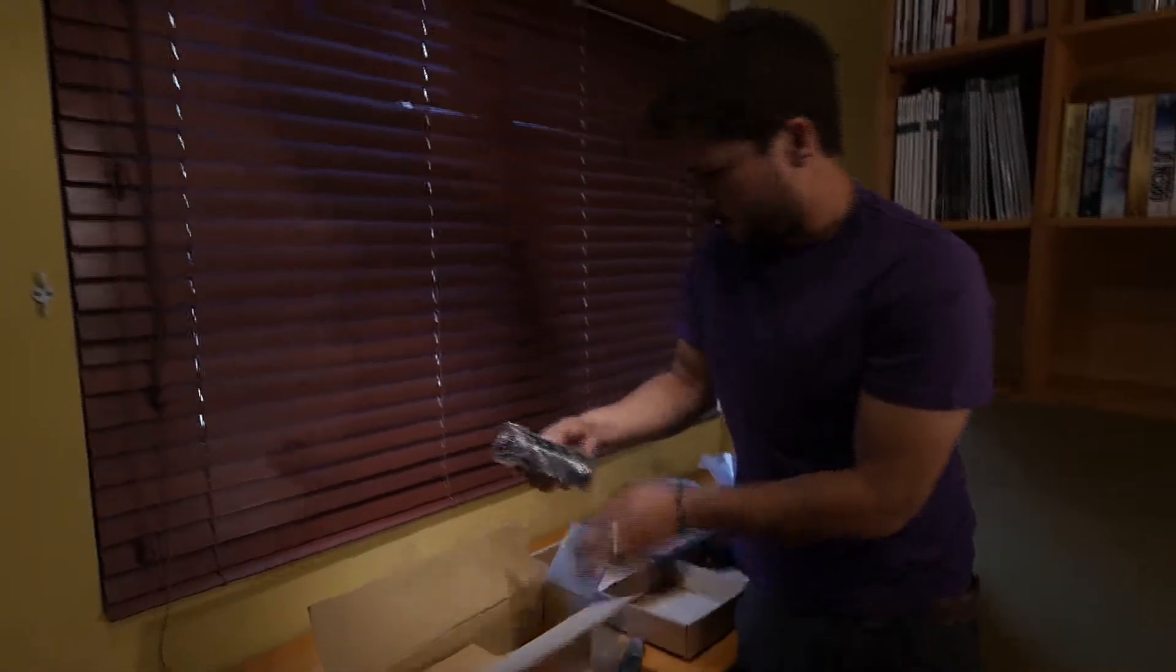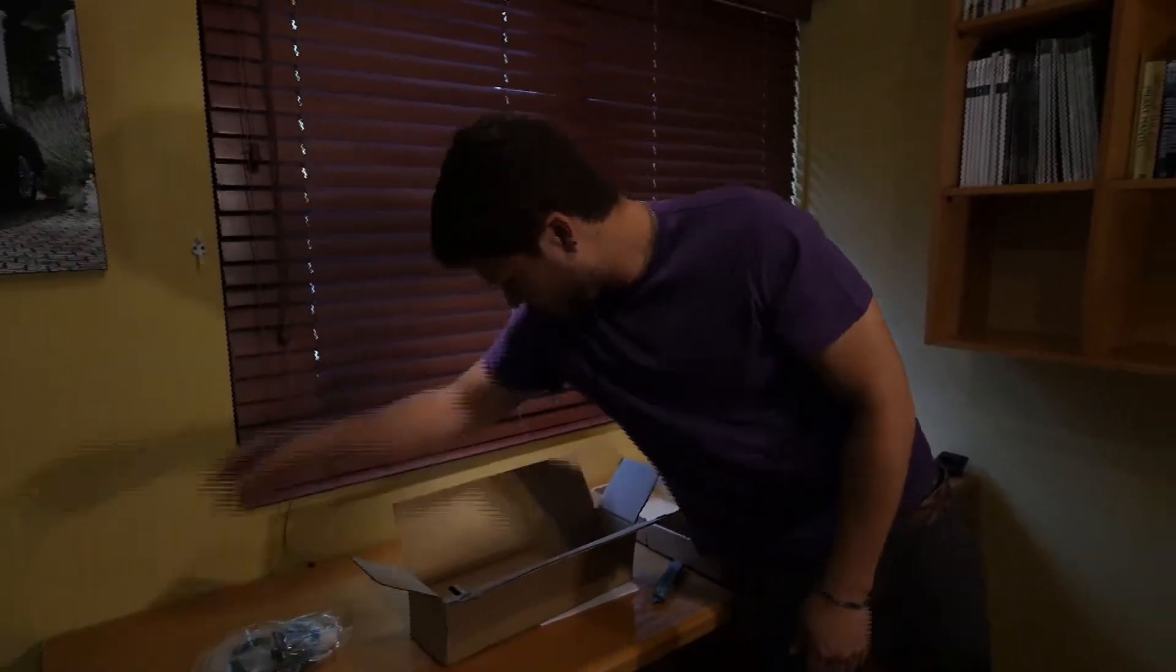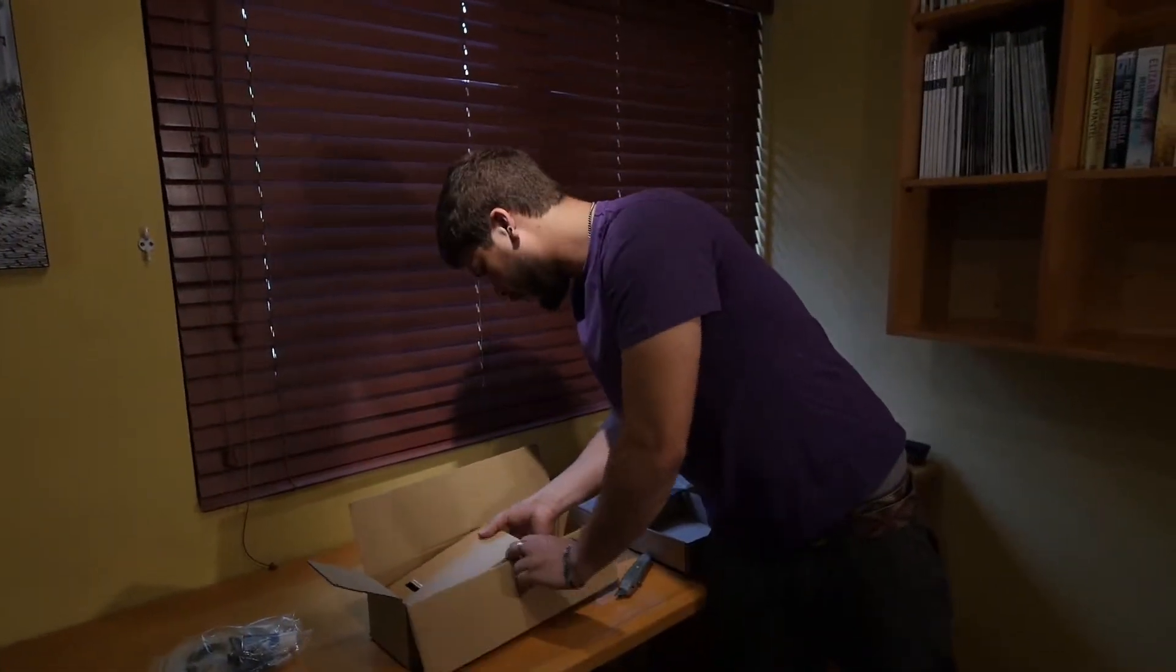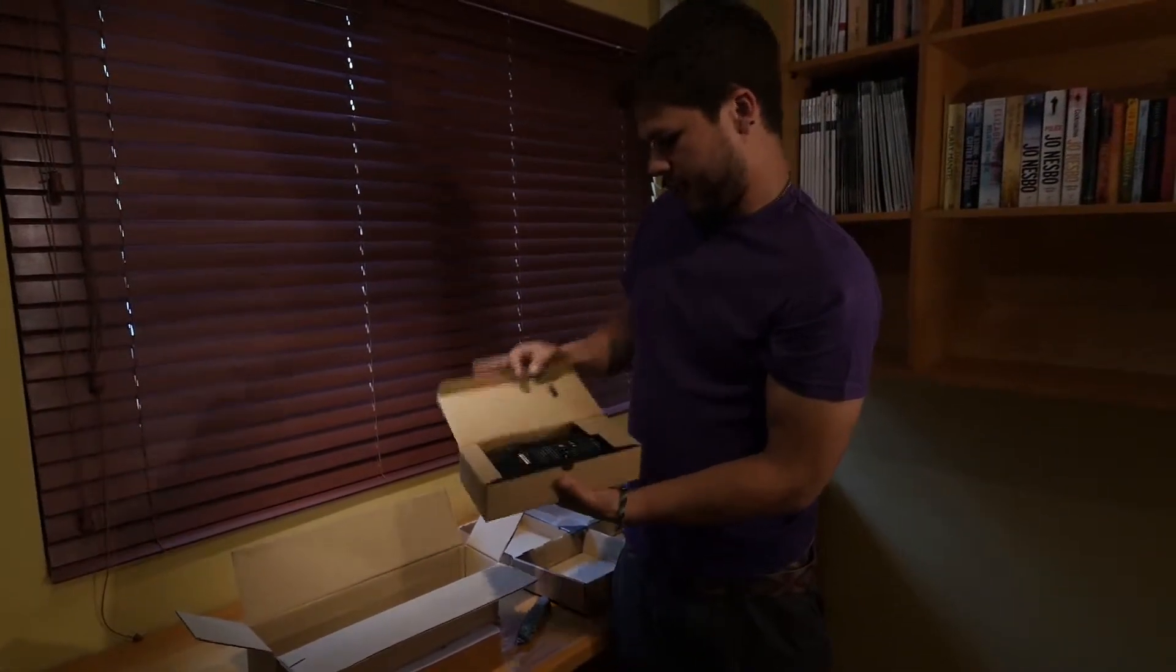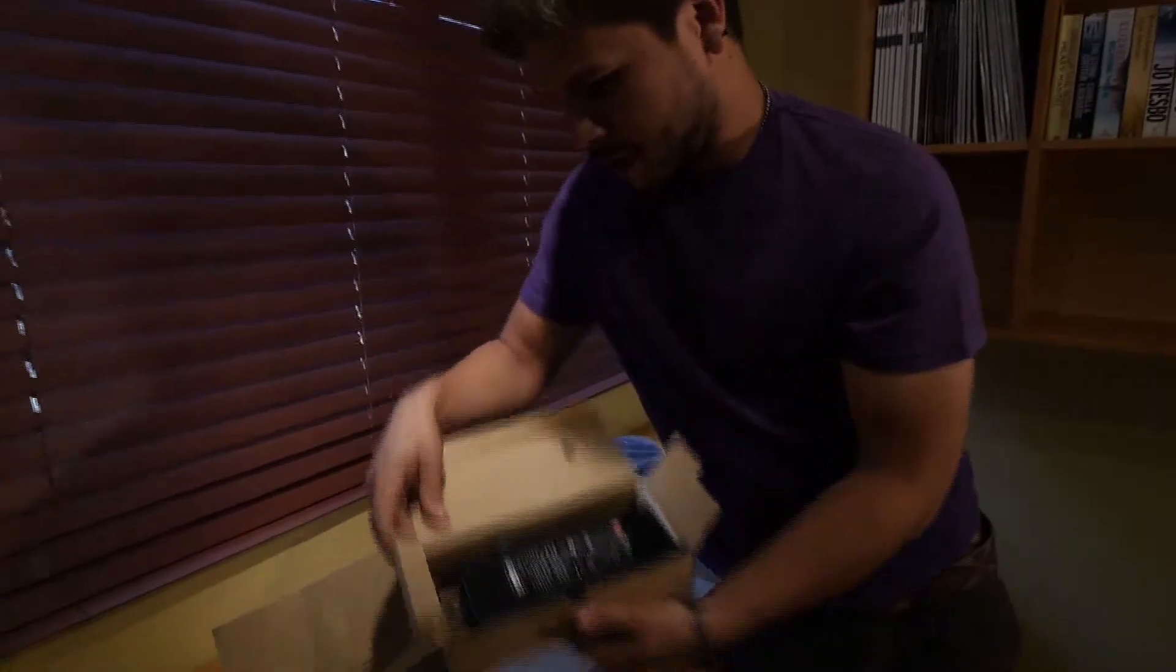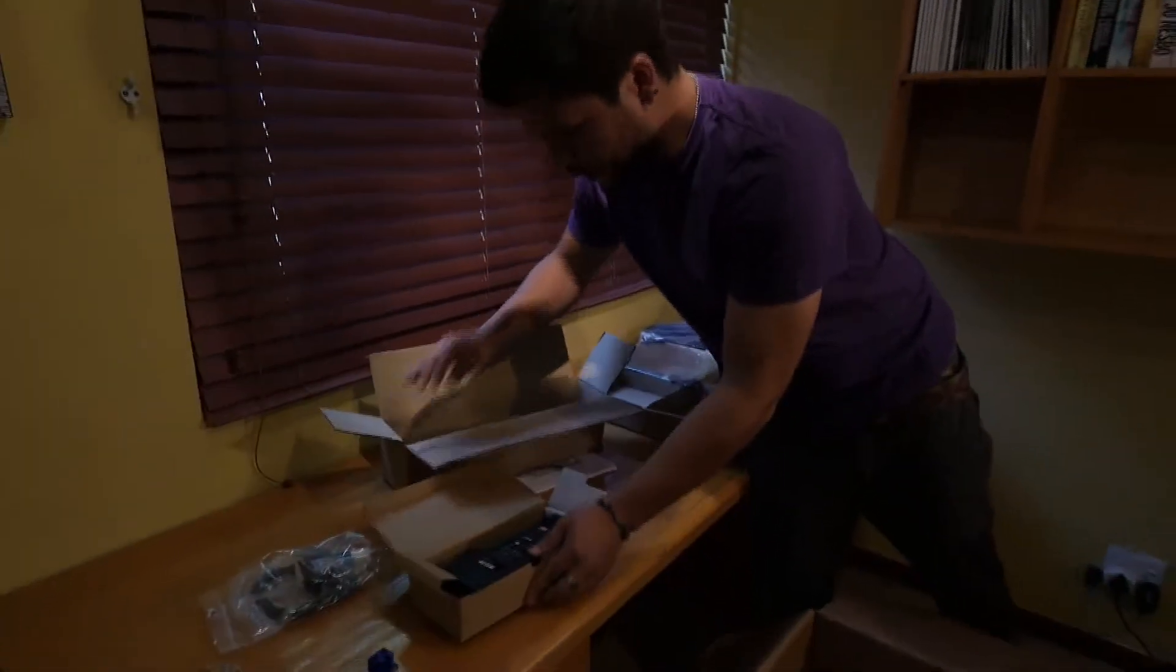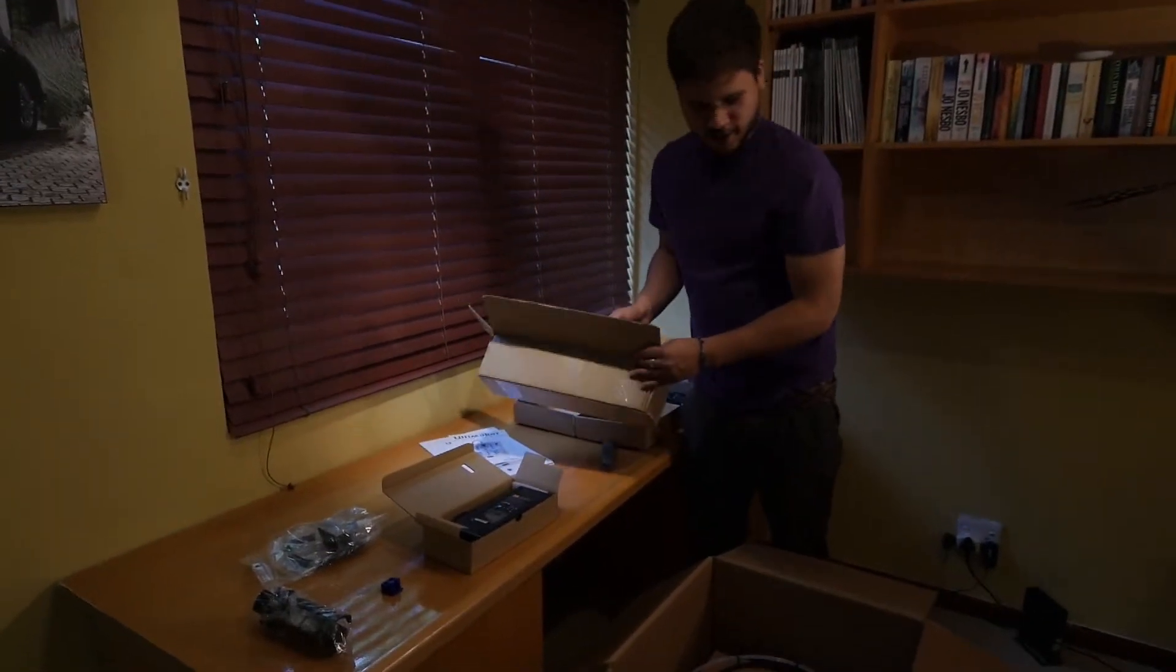And then here we've got our spool holder for our filament at the back. And here is what I think is our power supply, yeah. And here is the power supply for our machine. And that is what Ultimaker call our essential accessories there.